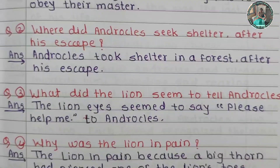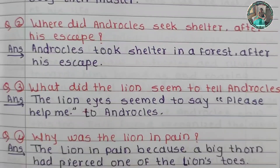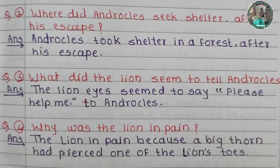Question number four: Why was the lion in pain? The lion was in pain because a big thorn had pierced one of the lion's toes.